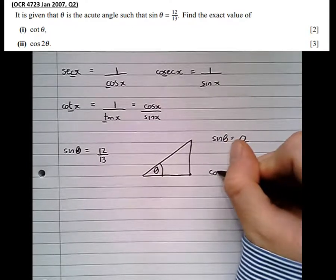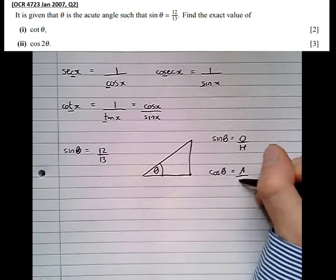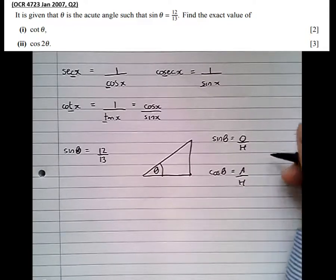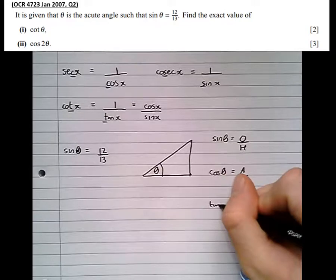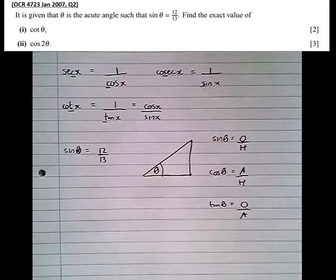So we've got sine theta equals opposite over hypotenuse, cos theta equals adjacent over hypotenuse (that's CAH), and tan theta equals opposite over adjacent (that's TOA) - SOHCAHTOA.